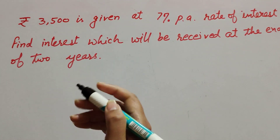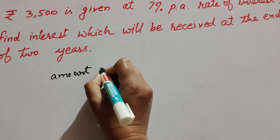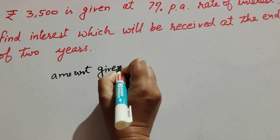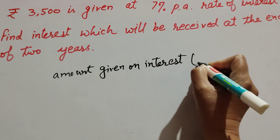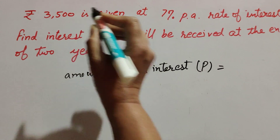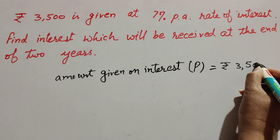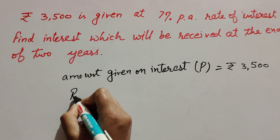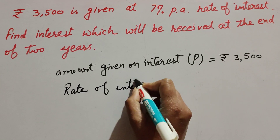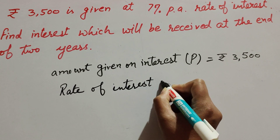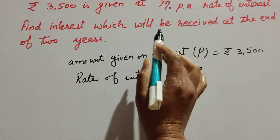The amount given on interest — we call it P, which is the principal. The principal given on interest is rupees 3500. The rate of interest is also given as seven percent per annum.